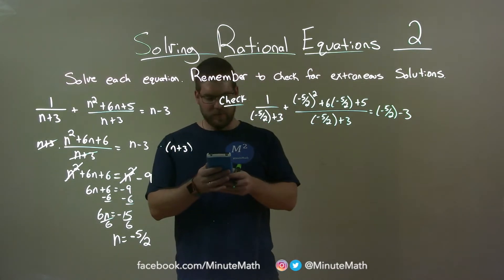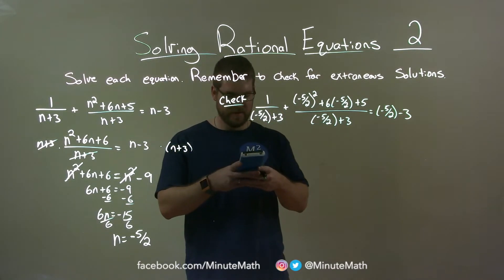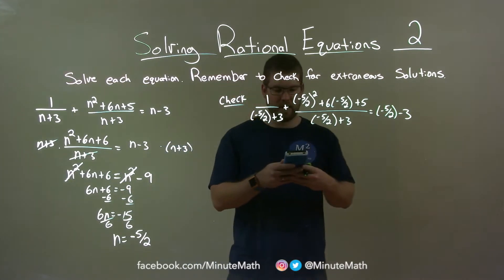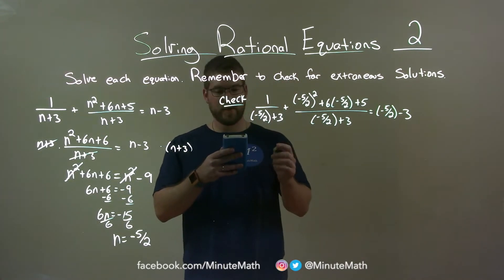Let's deal with this one. 1 divided by negative 5 halves plus 3, and that as a fraction is just 2, straight off the bat.